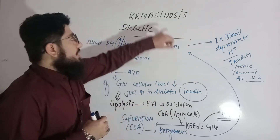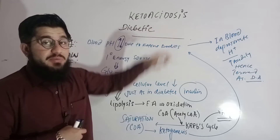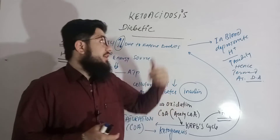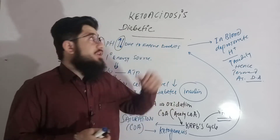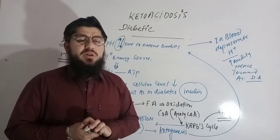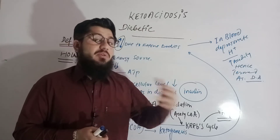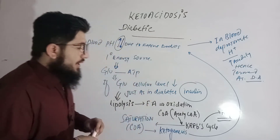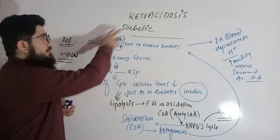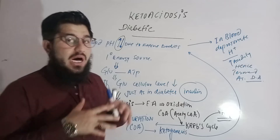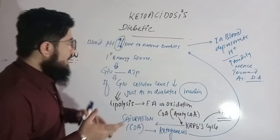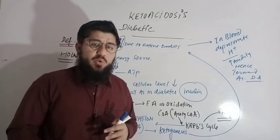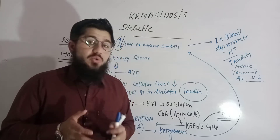The topic under discussion today is ketoacidosis, mainly diabetic ketoacidosis. There are some other factors also responsible for causing ketoacidosis, but today we'll be talking about diabetic ketoacidosis and we will discuss other factors in coming videos. In this lecture, we'll first talk about the definition of diabetic ketoacidosis, then the mechanism — the pathophysiology of diabetic ketoacidosis.